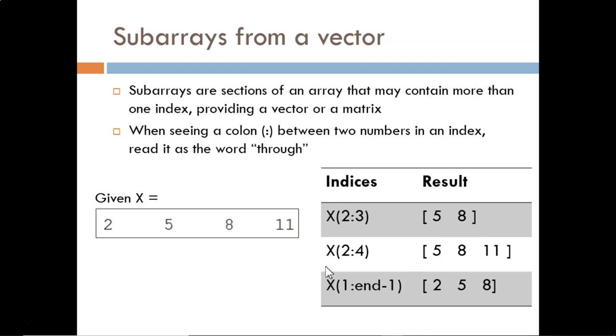This provides the vector 5, 8. The next example is very similar, but now we extend to the fourth index. Naturally, the resulting subvector contains one more number.